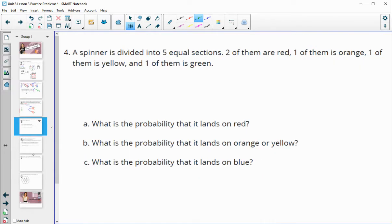A spinner is divided into five equal sections. Two of them are red, one of them is orange, one of them is yellow, and one of them is green. What's the probability it lands on red? Well, we have two out of the five spaces are red. So a two-fifths probability that we would land on red.